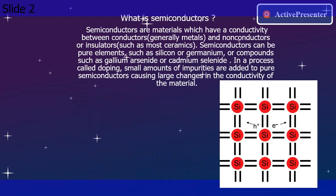Semiconductors can be pure elements, such as silicon or germanium, or compounds such as gallium arsenide or cadmium selenide. In a process called doping, small amounts of impurities are added to pure semiconductors, causing large changes in the conductivity of the material.